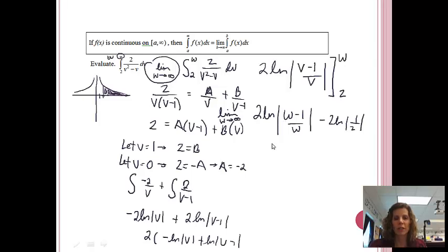Now we'll put infinity in for all of the w's. So I'll get 2 ln infinity minus 1 over infinity minus 2 natural log 1 half. I do notice that this part gives me infinity over infinity, and if it does, I get to use L'Hopital's rule. So if I do that, I'll still have 2 ln, and then I get to take the derivative of that part, which is just going to give me 1, and then minus 2 ln of 1 half.